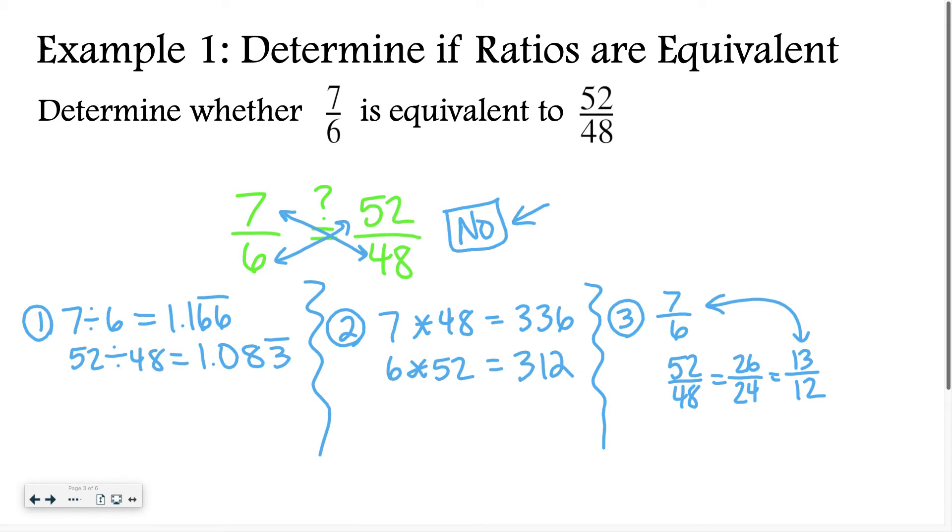So the first way I just divided and figured out, do they have the same decimal? No. The second way is to multiply on the diagonals, and if they're equal, they become equivalent. But in this case, they were not equal, so they are not equivalent. And the third way is to just reduce each fraction down to its simplest form without making it a mixed number, and see if they're equal that way. So you can do any of these three methods. That is up to you.